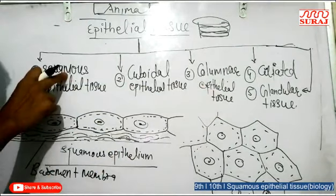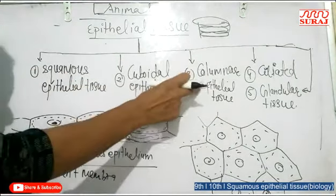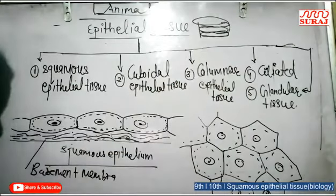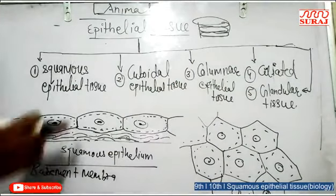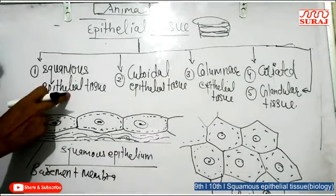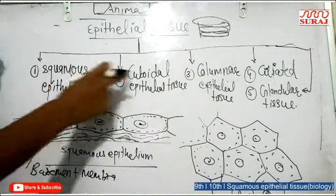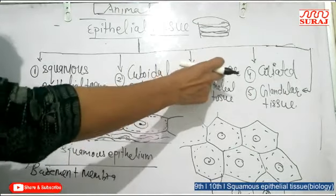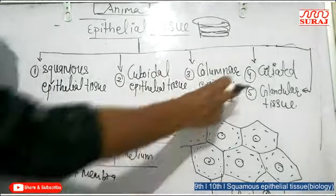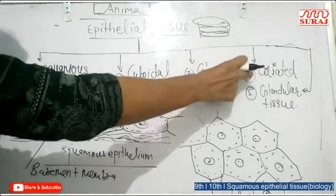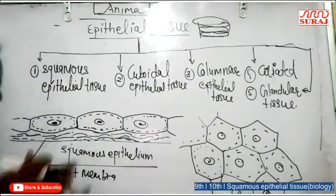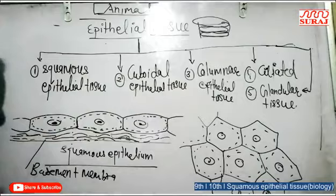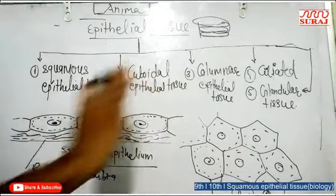These types are: squamous epithelial tissue, cuboidal, columnar, ciliated, and glandular epithelial tissue. Each of these may be simple or compound — for example, simple squamous, compound squamous, simple columnar, compound columnar, simple ciliated, and compound ciliated.